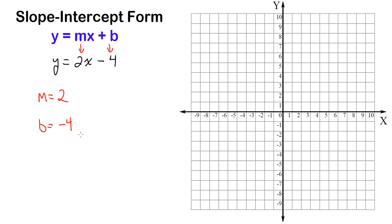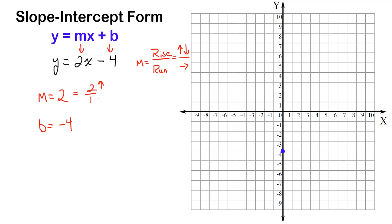We're going to begin with the y-intercept. Since the y-intercept is negative 4, I'm going to go to my y-axis and place a point on negative 4. Make sure you're doing this on the y-axis — a common error students make is putting the y-intercept on the x-axis. It is the y-intercept, so it has to go on the y-axis. Once you've placed the y-intercept, you need to move the way the slope tells you. Remember that slope is a fraction, which is rise over run. The rise tells you how the line moves up or down, and the run tells you how the line moves left to right. This whole number 2 comes from the fraction 2 over 1, and since it's positive, the line is going to move up.